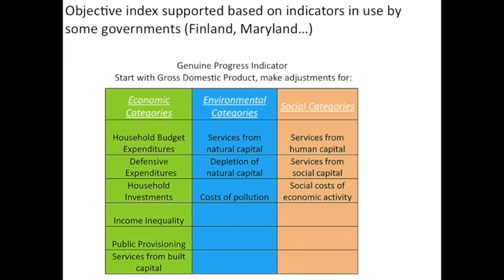Let's look at another objective component indicator: the Genuine Progress Indicator. The GPI started in the 90s, had a lot of energy, then sort of petered out, and then took a huge resurgence when governments including Maryland in the United States and Finland started using it in lieu of GDP. What the Genuine Progress Indicator does is take the gross domestic product and make adjustments — taking out the bads like the cost of pollution and crime, adding in goods like volunteering and caring for children, and normalizing for long-term investments normally counted in a single year's GDP.